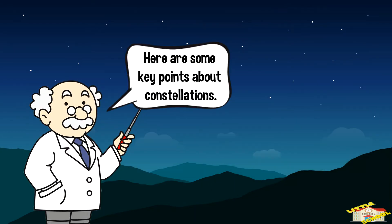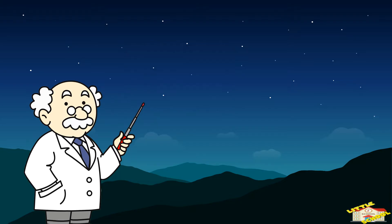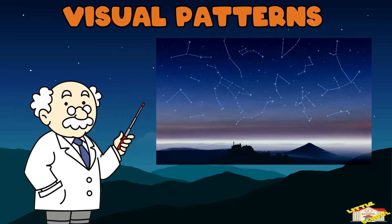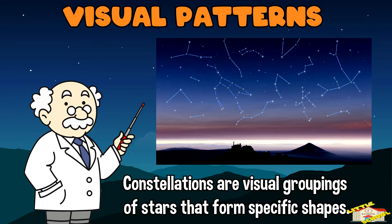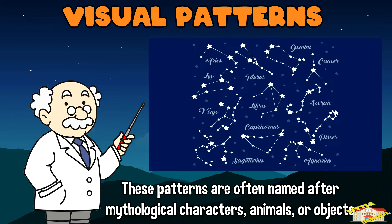Here are some key points about constellations. Visual patterns: constellations are visual groupings of stars that form specific shapes or figures when observed from Earth. These patterns are often named after mythological characters, animals, or objects.